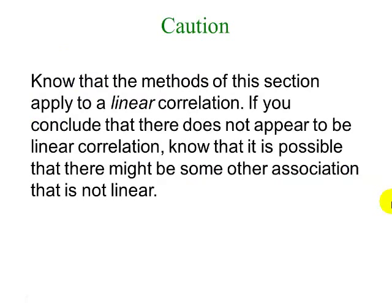Remember that the methods we're learning in this section apply to linear correlation. Even if we conclude that there doesn't seem to be a linear correlation, it's possible there might be some other association that is not linear.